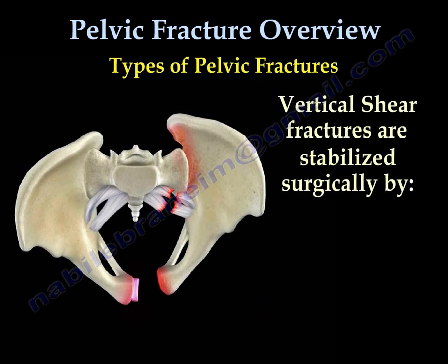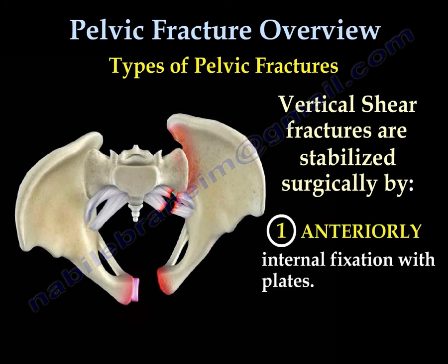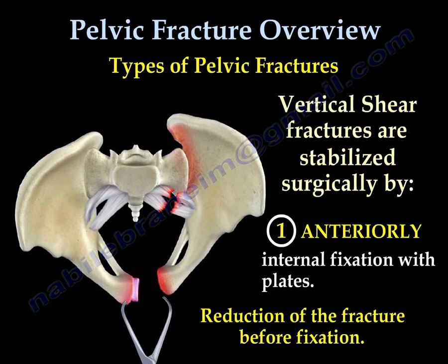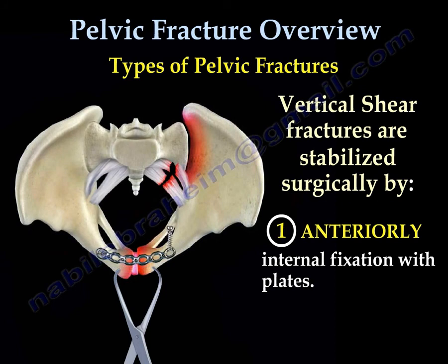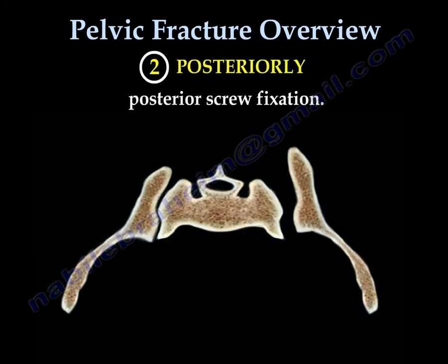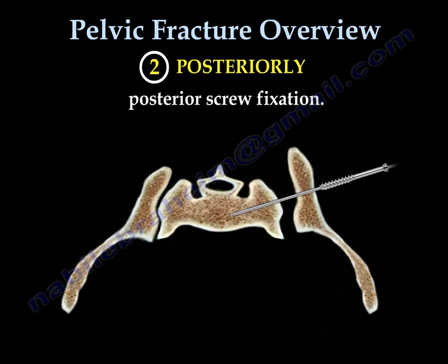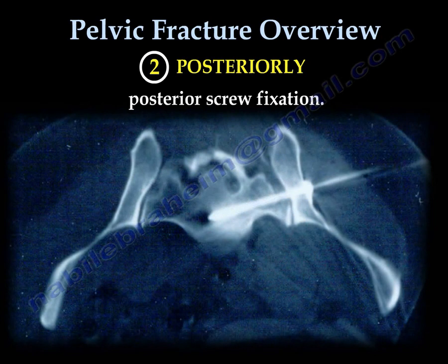The vertical shear fracture is stabilized surgically by anterior stabilization using plates. Reduction of the symphysis pubis is done before fixation. This fracture will also need to be fixed posteriorly — we usually use posterior screw fixation. A CT scan shows the posterior screw fixation.